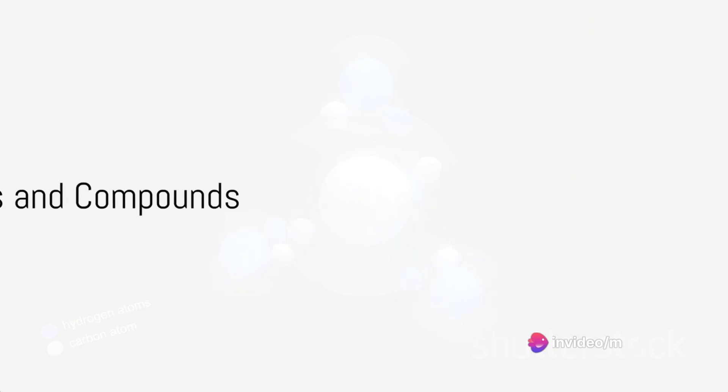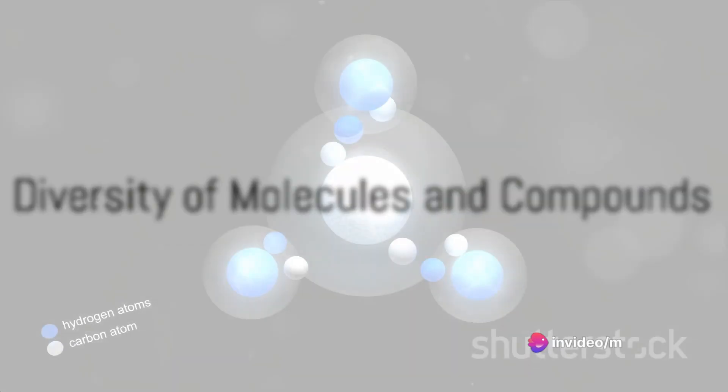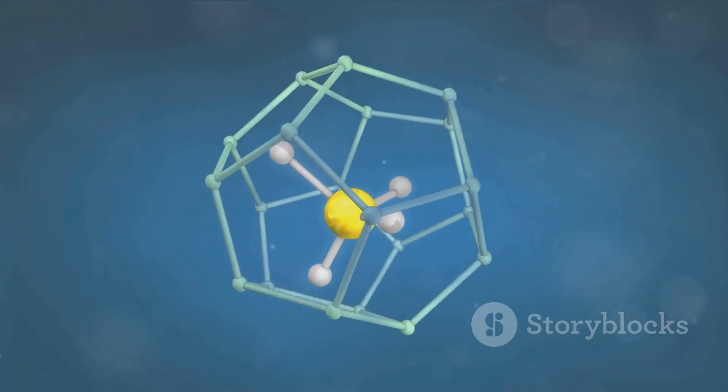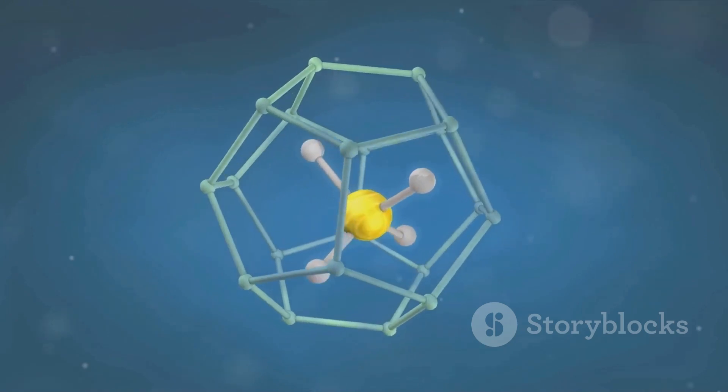But it's not always about duets. Molecules of compounds can range from simple structures with just a handful of atoms, to complex giants with hundreds or even thousands of atoms linked together.